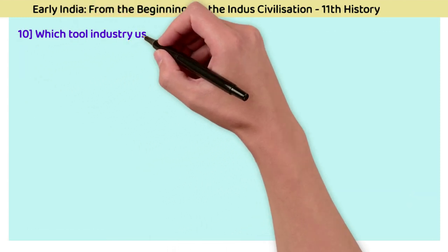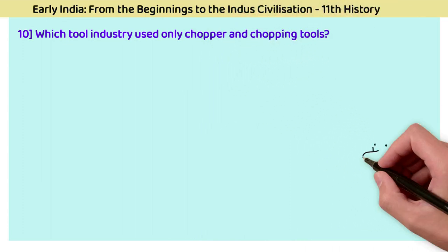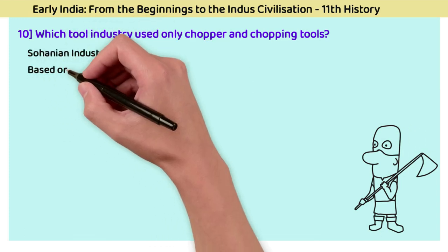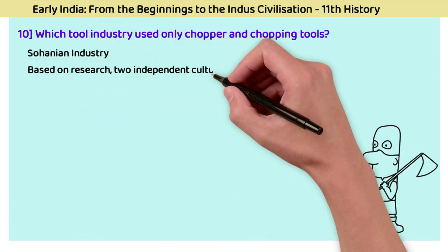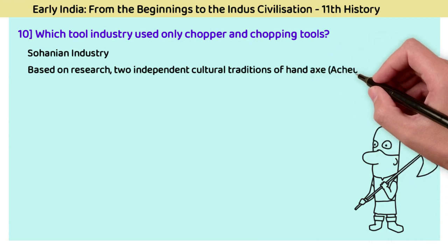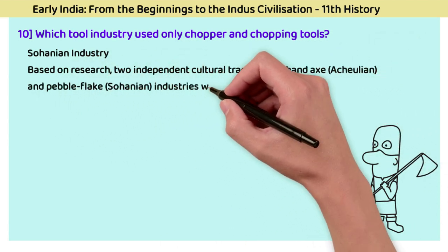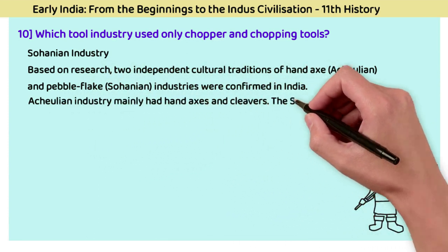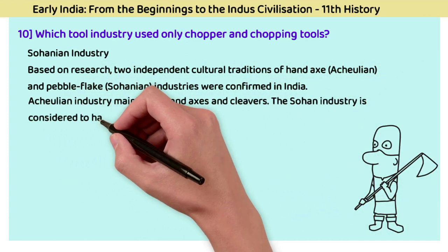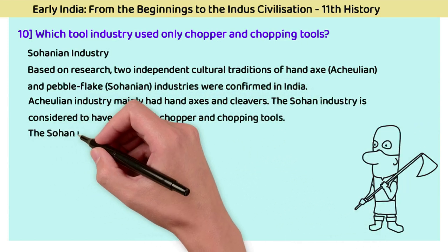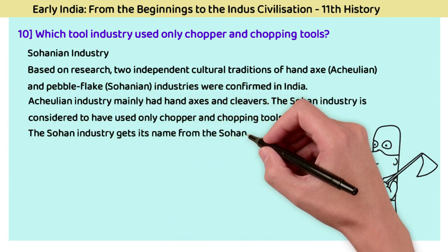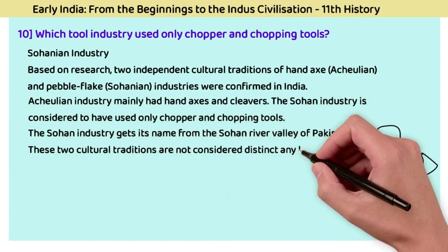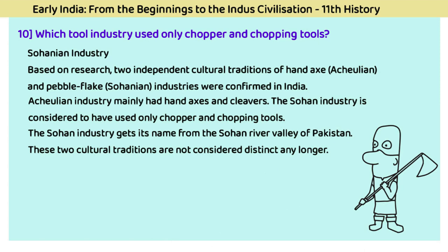Question 10: Which tool industry used only chopper and chopping tools? The answer is the Sohanian industry. Two independent cultural traditions were confirmed in India: the hand-axe tradition (Acheulian) and the pebble-flake tradition (Sohanian). The Acheulian industry mainly had hand axes and cleavers, while the Sohan industry used only choppers and chopping tools. The Sohan industry gets its name from the Sohan River Valley of Pakistan, and these traditions are no longer considered distinct.